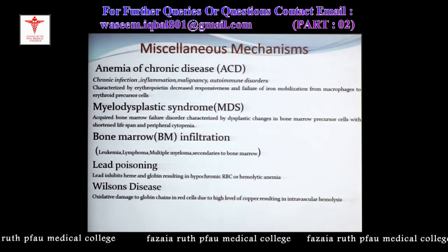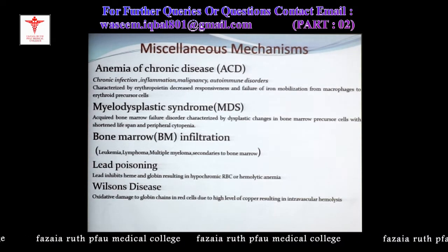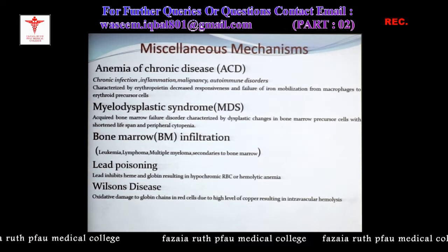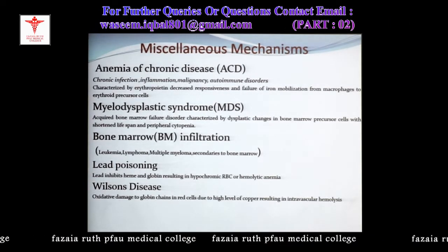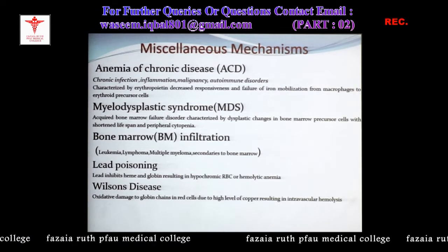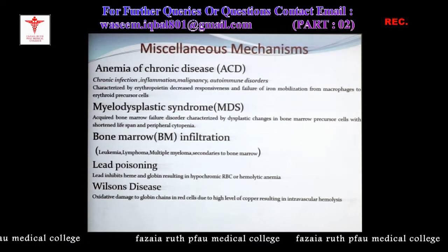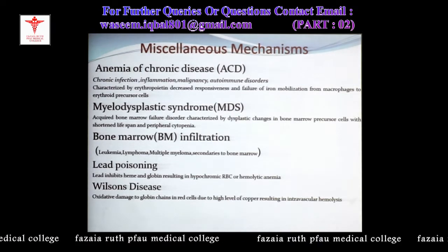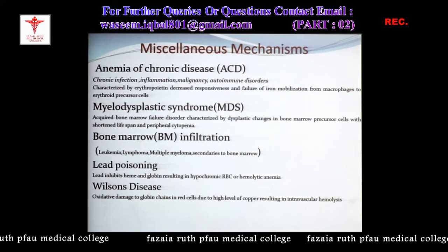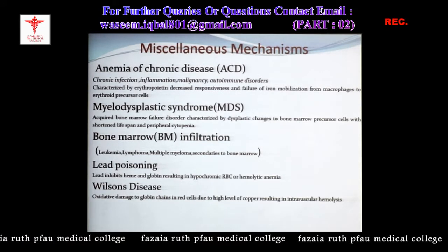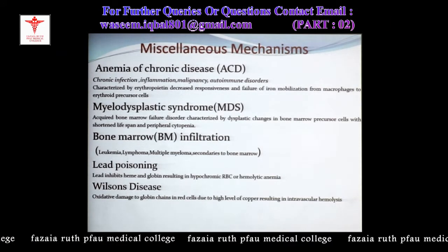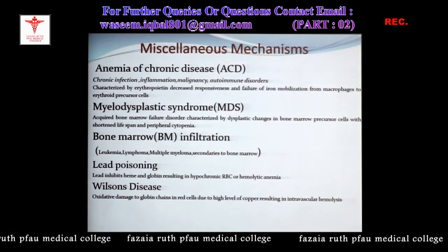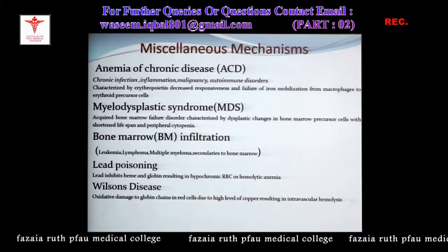Lead poisoning — excessive lead can inhibit heme synthesis and also results in globin destruction, leading to hypochromia and hemolytic anemia. Wilson's disease is an inherited autosomal recessive condition with a defect in copper metabolism, where excessive copper causes oxidative damage to the globin chains of hemoglobin, resulting in intravascular hemolysis.